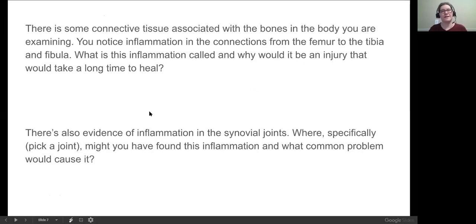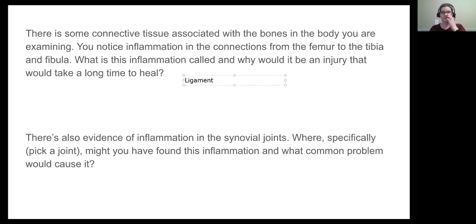Alright. There are some connective tissues in the body you are examining, which is also probably not going to happen for forensic anthropology, but again, biology. So we're faking it real good. It says you notice inflammation in the connections from the femur to the tibia and fibula. What connects the femur, the tibia and the fibula? Well, the femur is the large bone in your thigh. The tibia and the fibula are the small bones in the bottom portion of your leg, your shin. So if you are connecting a bone to a bone, it is called a ligament. What about if you're connecting a bone to a muscle? That's another one. It is called a tendon.